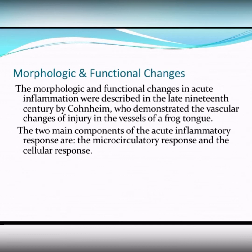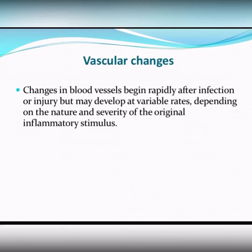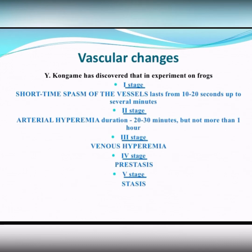The morphological and functional changes in acute inflammation were described in the late 19th century by Conheim, who demonstrated the vascular changes of injury in the vessels of a frog tongue. During acute inflammatory response, we always can observe the microcirculatory response and the cellular response. Changes in blood vessels begin rapidly after infection or injury, but may develop at variable rates depending on the nature and severity of the original inflammatory stimuli. But always we can observe a sequence of these changes.